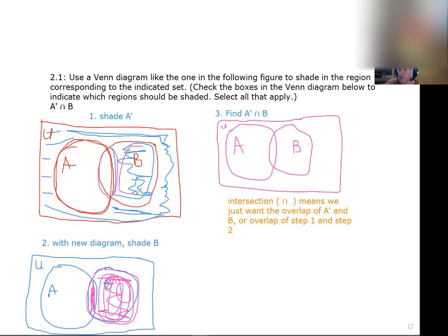But this portion of B without that overlap is shaded in both. And so I'm going to shade this portion of B. So the portion of B that is not shared with A is all that I'm going to shade.